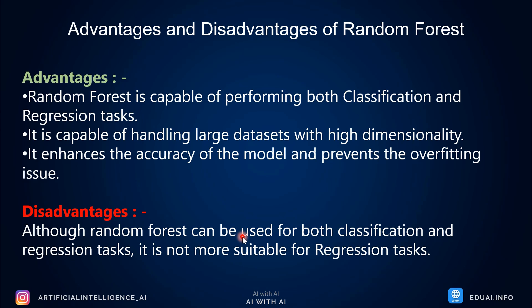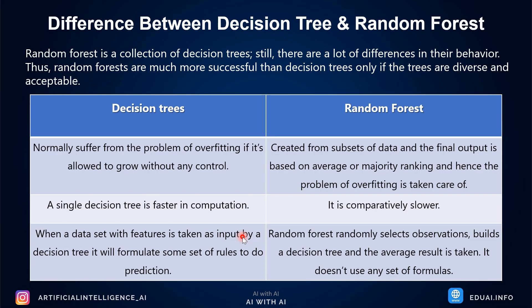Now let's look at the differences between decision tree and random forest — one of the most frequently asked interview questions. Random forest is a collection of decision trees, but there are many differences in their behavior. Decision trees normally suffer from overfitting because there is only one tree allowed to grow without control. In random forest, subsets of data are created and the final output is based on majority vote or average, preventing the problem of overfitting.